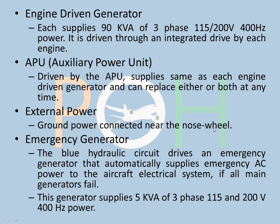Emergency generator: the blue hydraulic circuit drives an emergency generator that automatically supplies emergency AC power to the aircraft electrical system if all main generators fail. All main generators include the two engine driven generators and the APU generator. If all of these fail, the blue hydraulic circuit runs the emergency generator to supply some emergency AC to run the important components. This generator supplies 5 kVA of 3-phase, 115 and 200 volts, 400 Hz power — quite a bit less than the 90 kVA of the main generators.